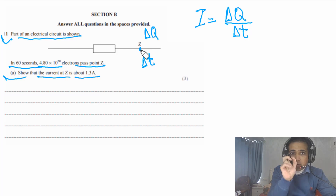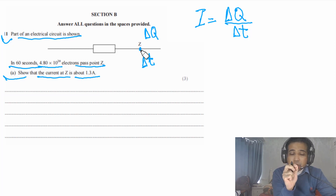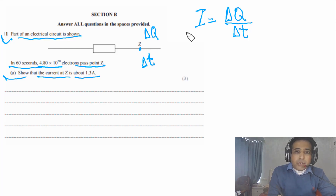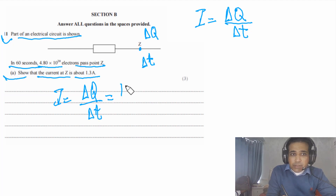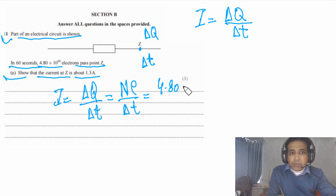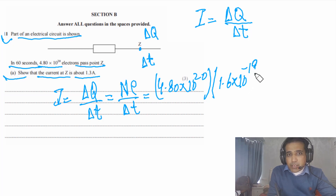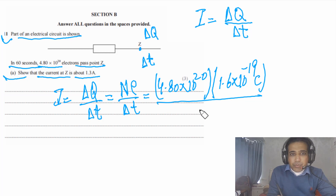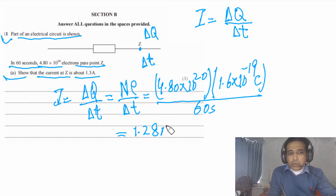It simply means that if you look at one point and count the number of electrons passing through that point in a certain period of time, then divide the charge of those electrons by that time, that gives electric current. So I = ΔQ / ΔT, and ΔQ equals number of electrons times the charge of a single electron. Number of electrons = 4.80 × 10²⁰, charge per electron = 1.6 × 10⁻¹⁹ C, time = 60 s, giving a final answer of about 1.28 amps.